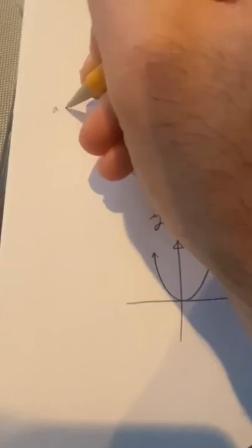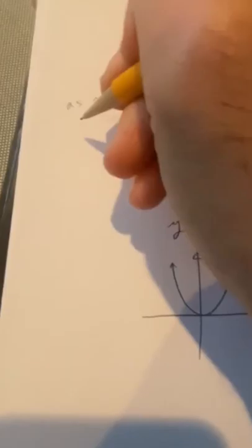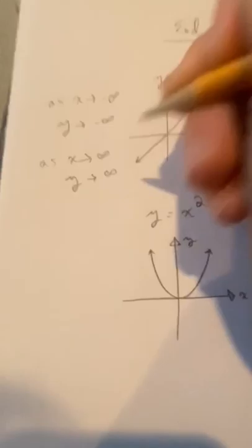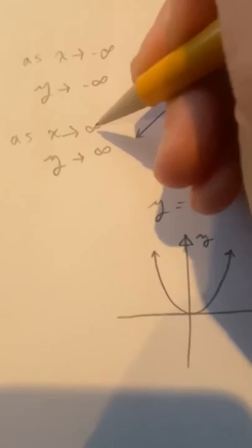In this case, as x goes to negative infinity, y goes to negative infinity. And as x goes to positive infinity, y goes to positive infinity. That's how we write the end behavior — as x goes to either negative or positive infinity, we describe what happens to y.